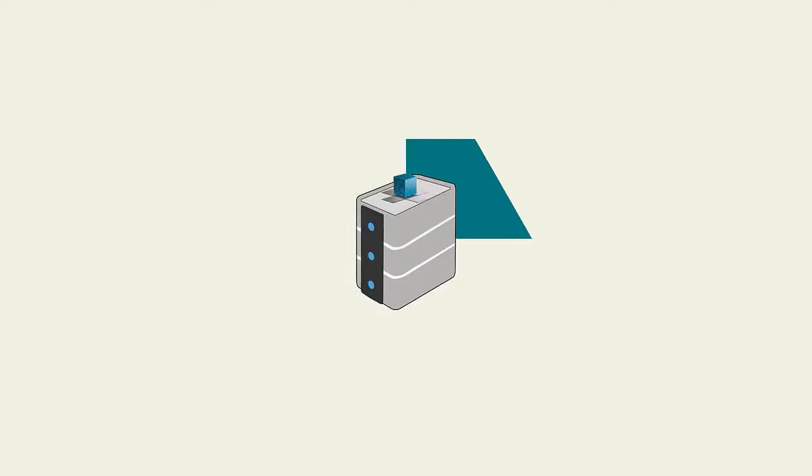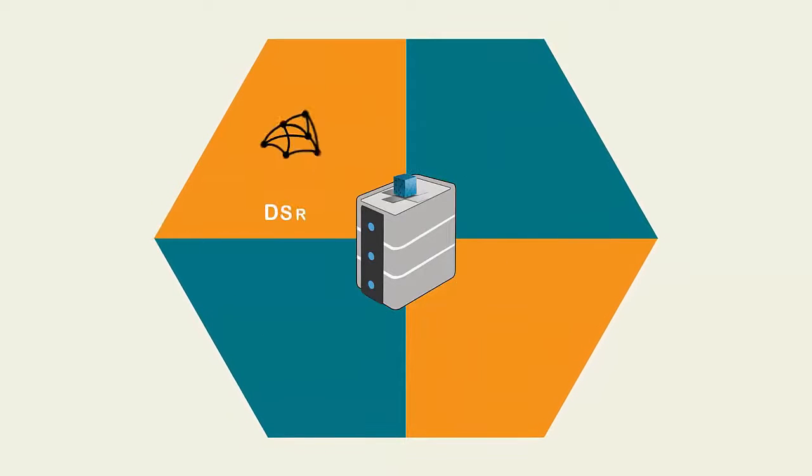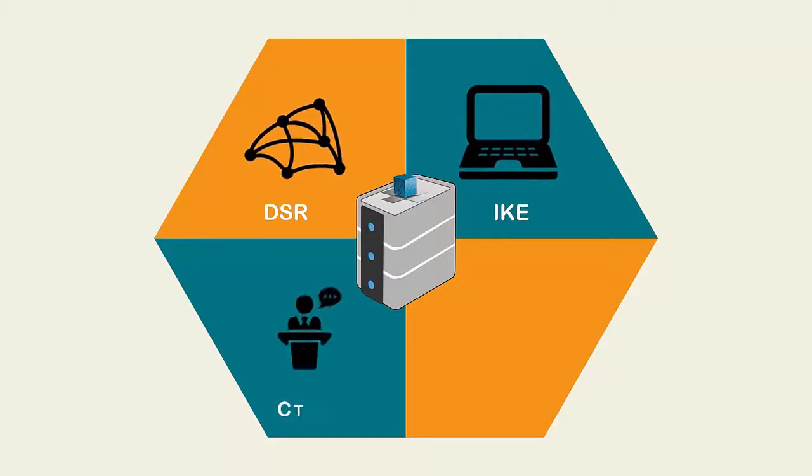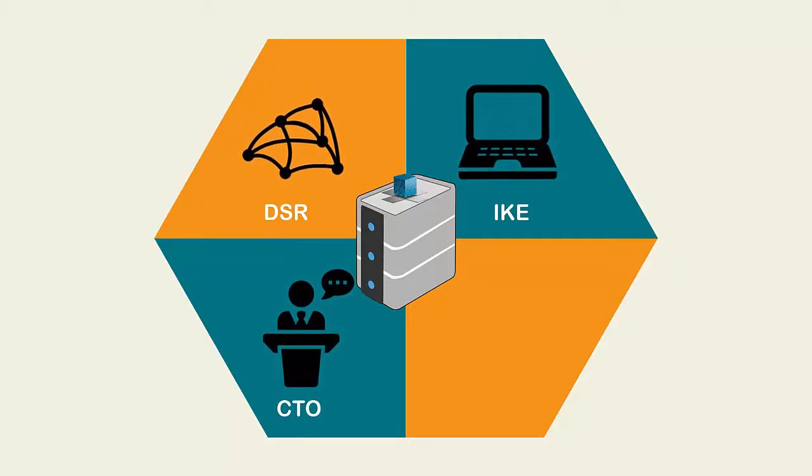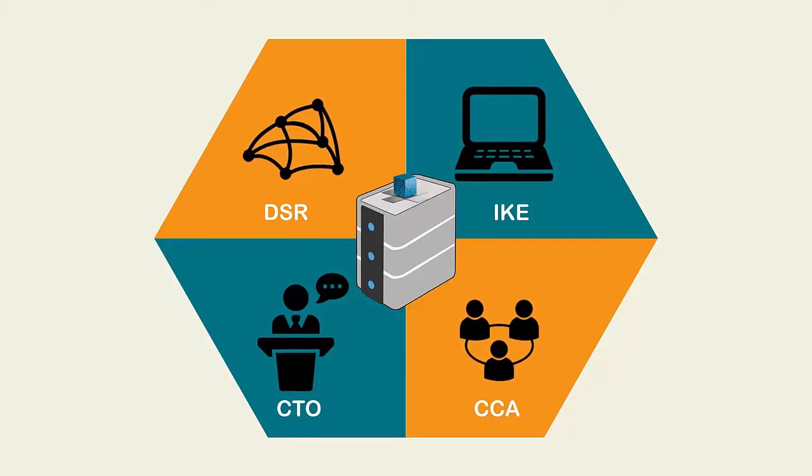The DCIC has four major components: data science research, integrated knowledge environment, community training and outreach, and the Consortium Coordination and Administration.